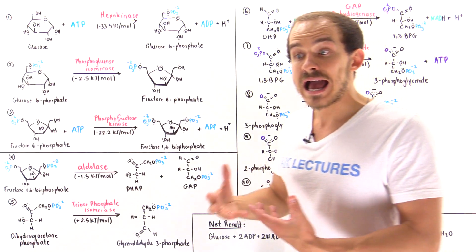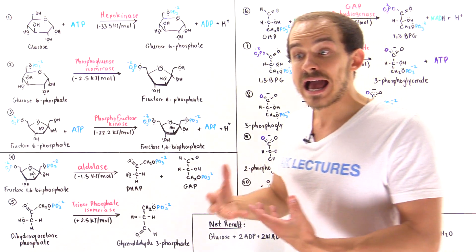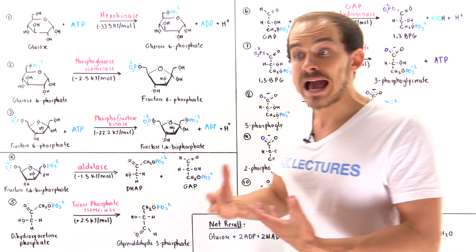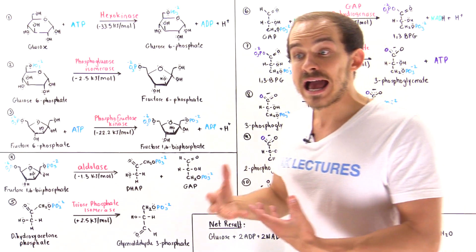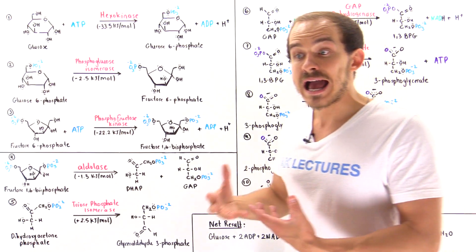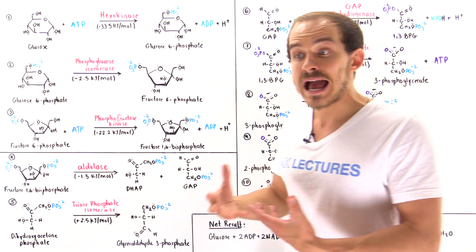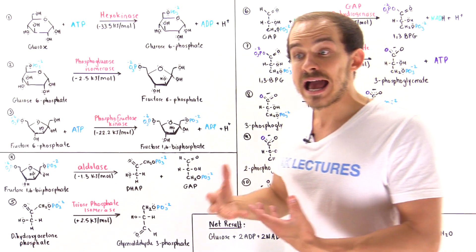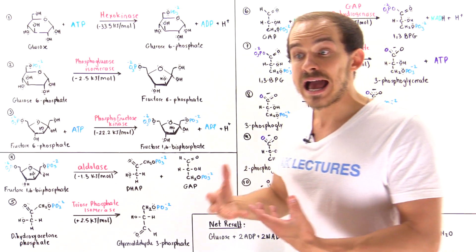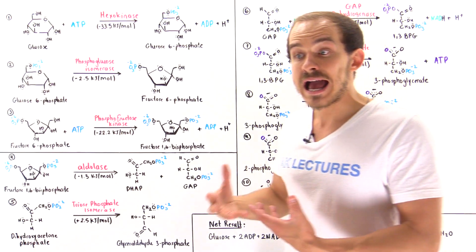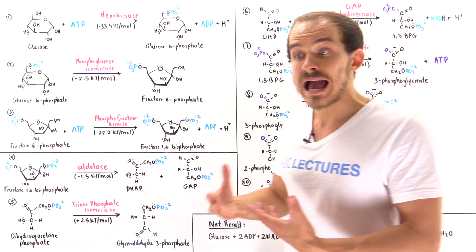In step seven, 1,3-BPG transfers its phosphoryl group onto an ADP molecule, producing ATP. The enzyme is phosphoglycerate kinase—named for the 1,3-bisphosphoglycerate substrate and the phosphorylation reaction it catalyzes. The products are ATP and 3-phosphoglycerate.